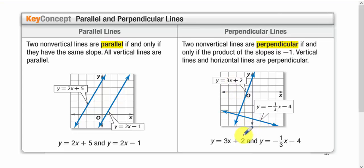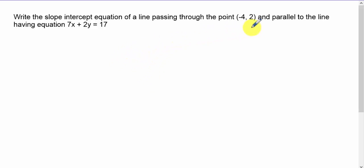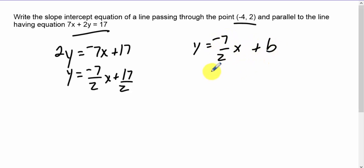Want to write the slope-intercept of the line that is going through (-4, 2) and is parallel to this line. If it's parallel, it has to have the same slope, which means we have to find the slope of this line. So that's 2y = -7x + 17, y = -7/2 x + 17/2. Now we know we can say I have a new equation y = -7/2 x + b, because this new line has to be parallel, meaning it has to have the same slope.